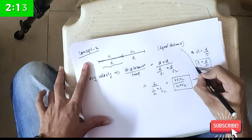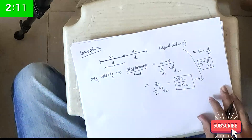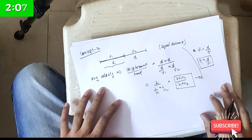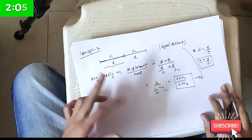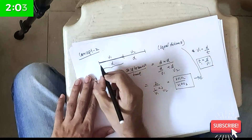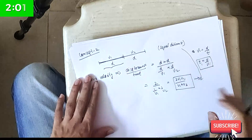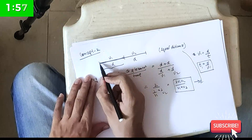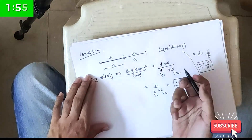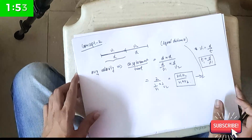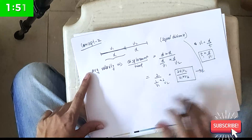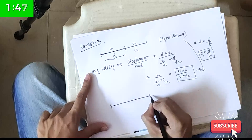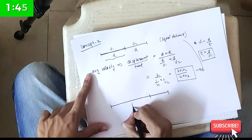What is the average speed in this case? Since the particle moves in one dimension without coming back, distance and displacement are equal, so average speed equals average velocity — both equal 2v1v2 / (v1 + v2) in this scenario.